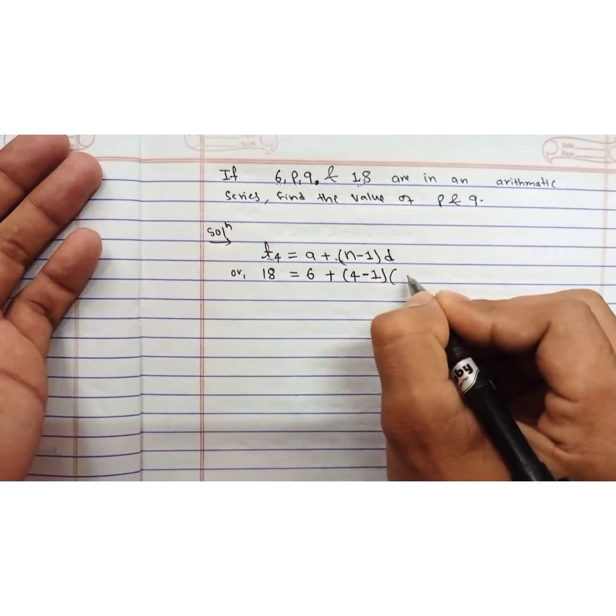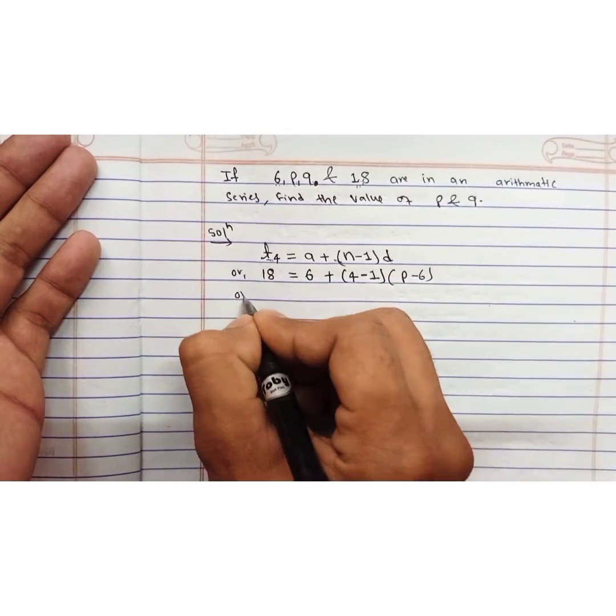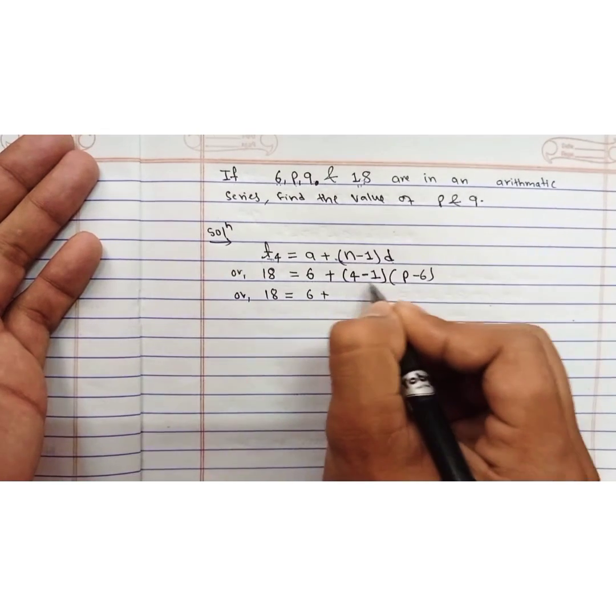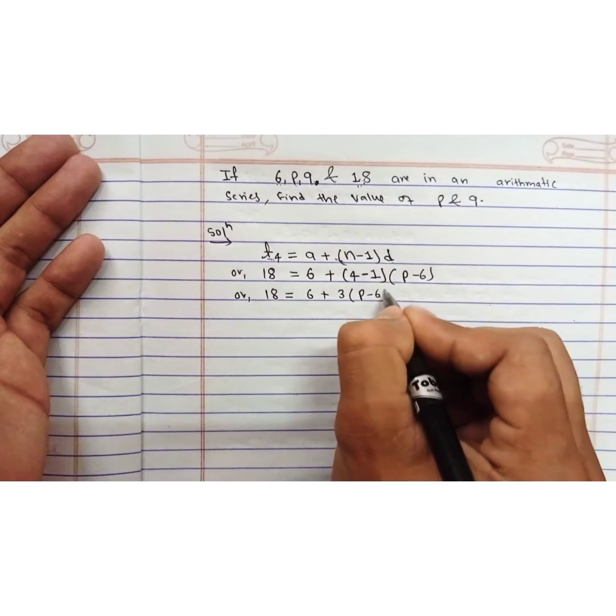If we solve it, 18 equals 6 plus 4 minus 1 is 3 times (p minus 6).